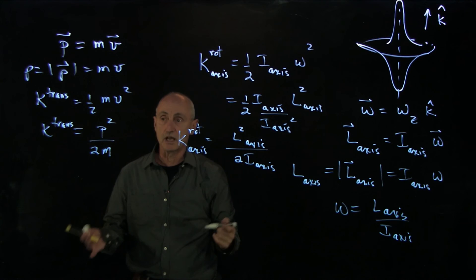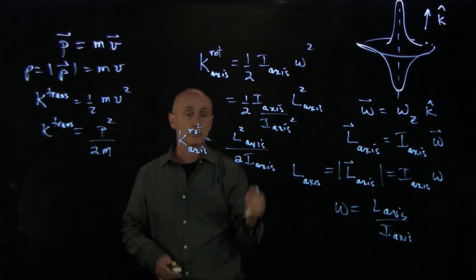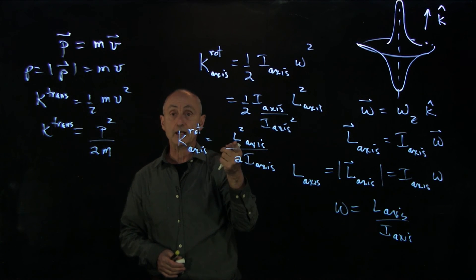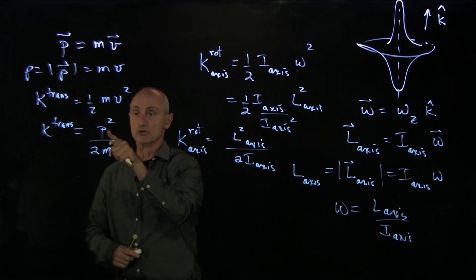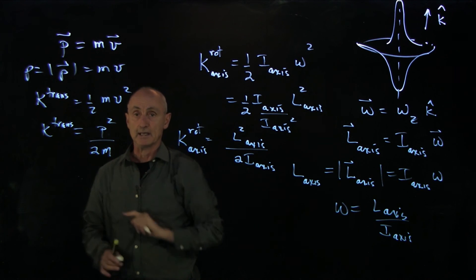So once again, we see this nice analogy for rotational motion, where we describe it in terms of the angular momentum and the moment of inertia, and the linear motion we describe in terms of the momentum and the mass.